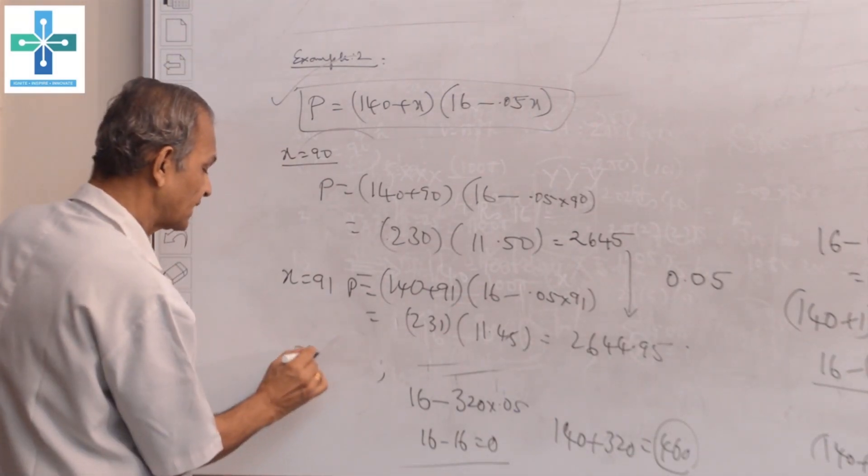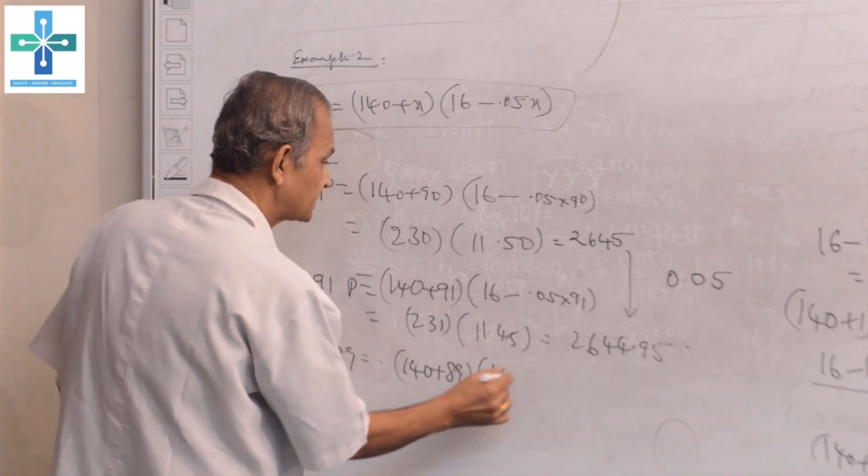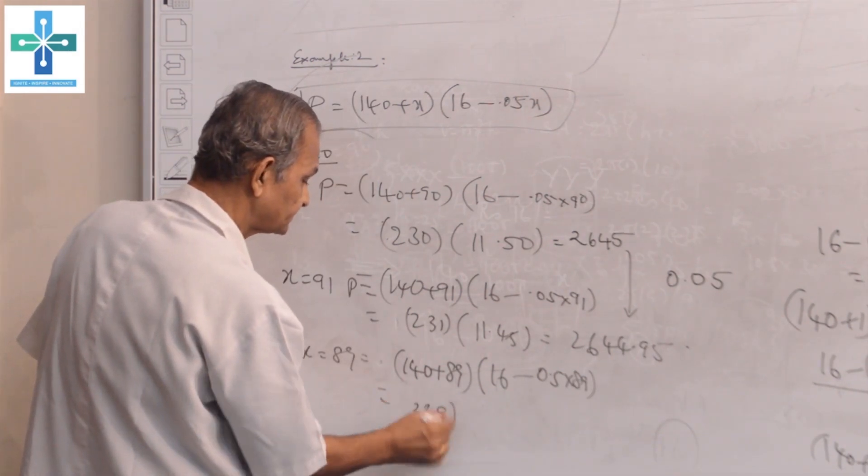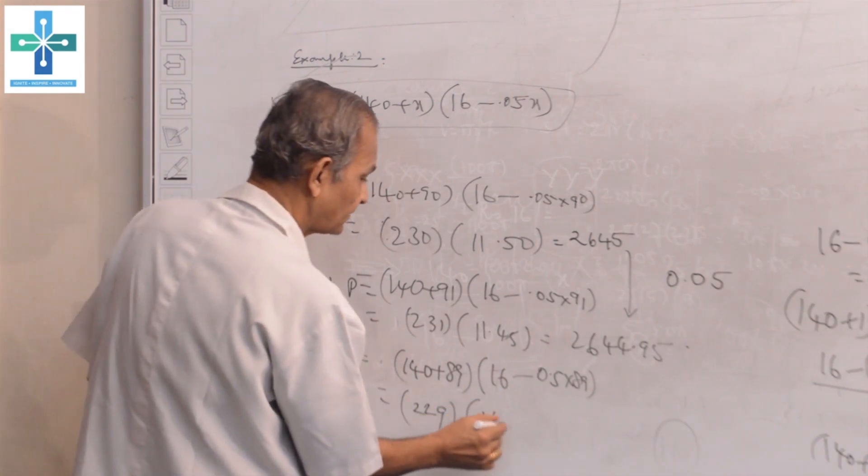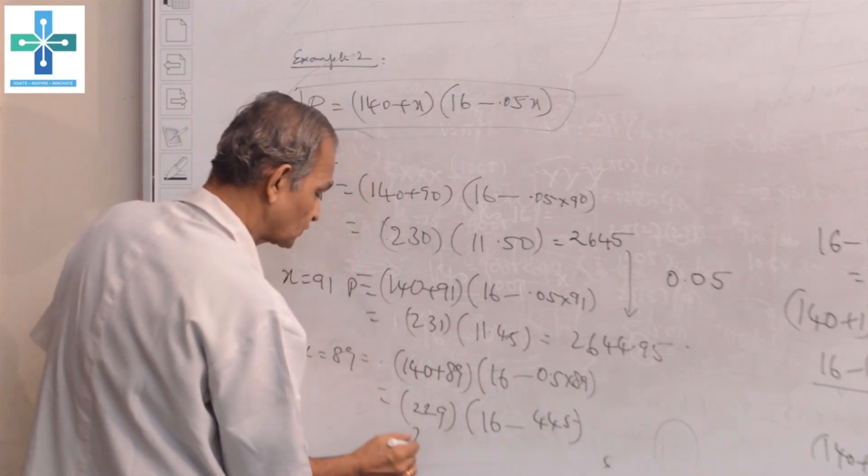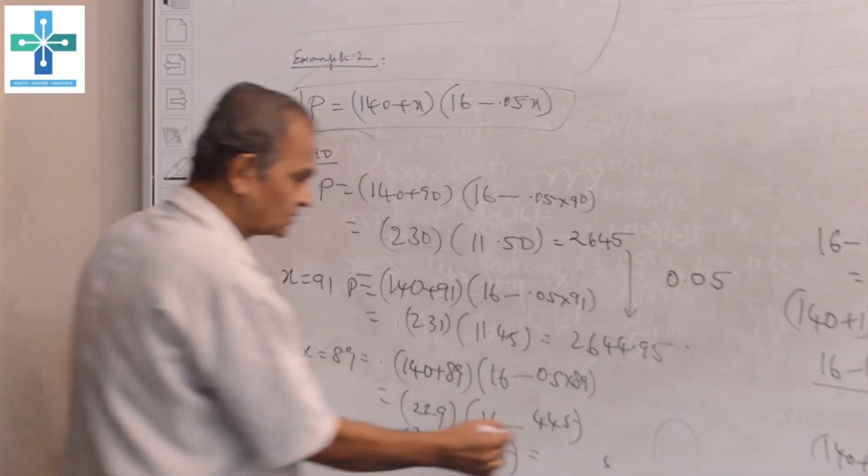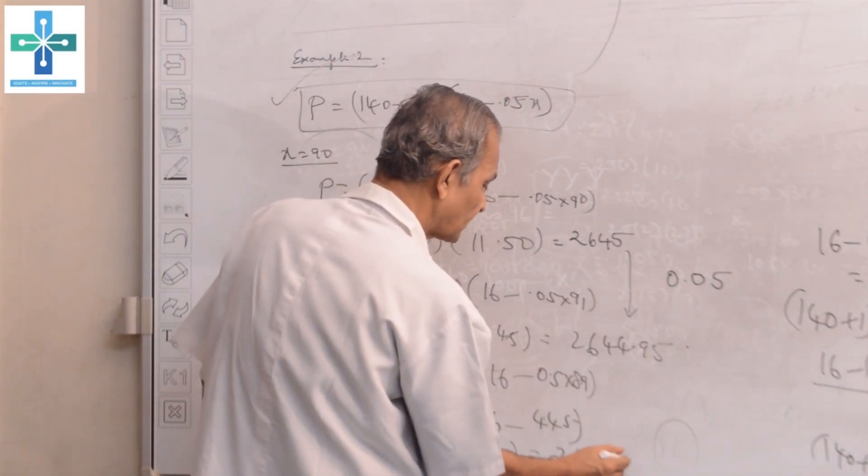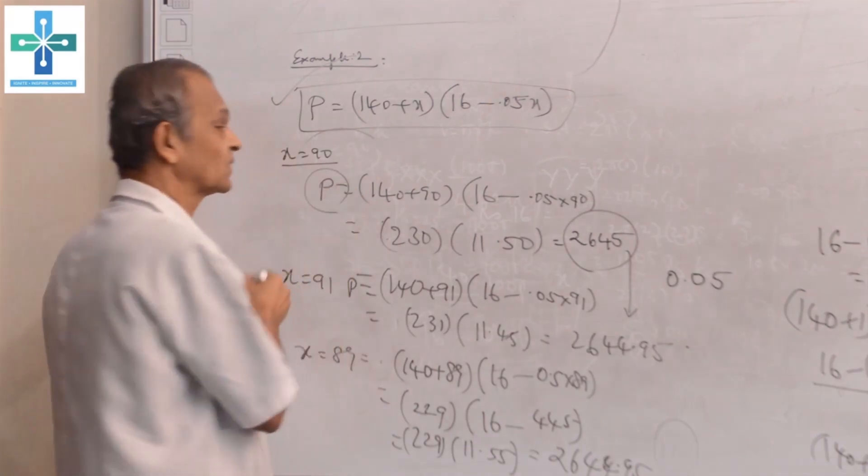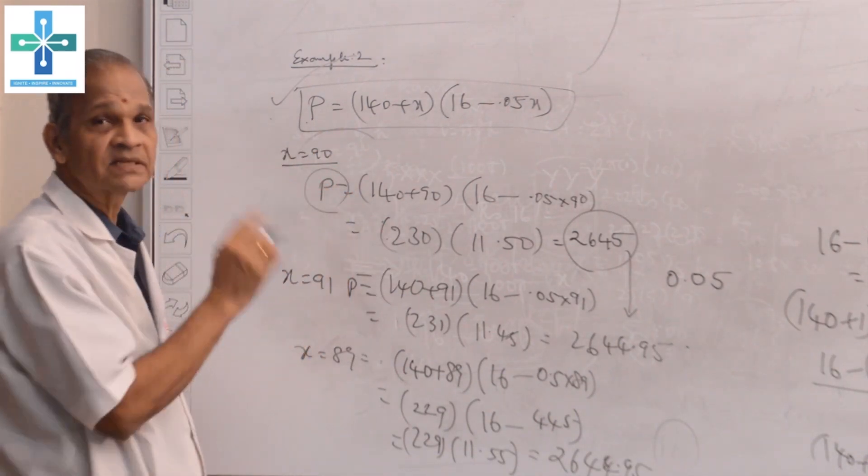Suppose if you take 89 persons, when X = 89, (140 + 89) times (16 - 0.05 times 89) equals 229 into 11.55, which is 2,644 rupees 95 paisa. We see that the maximum profit is at this stage when X is 90. This can be identified only with the help of calculus in maxima minima.